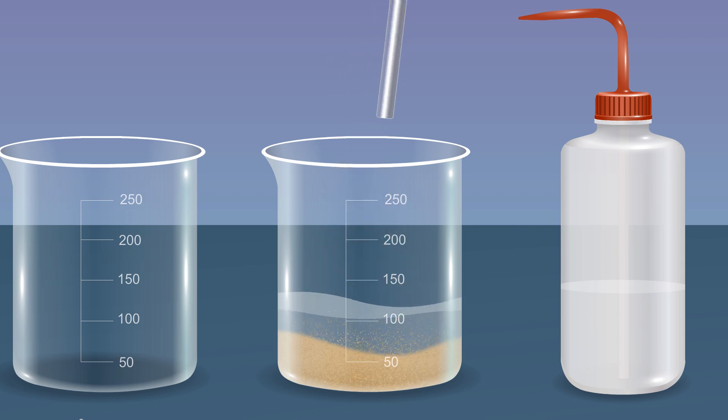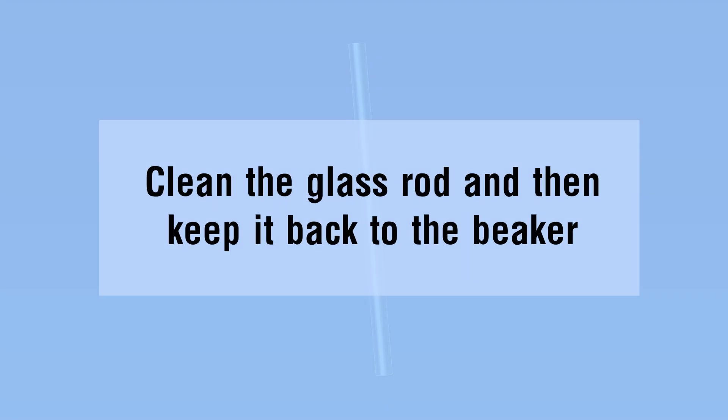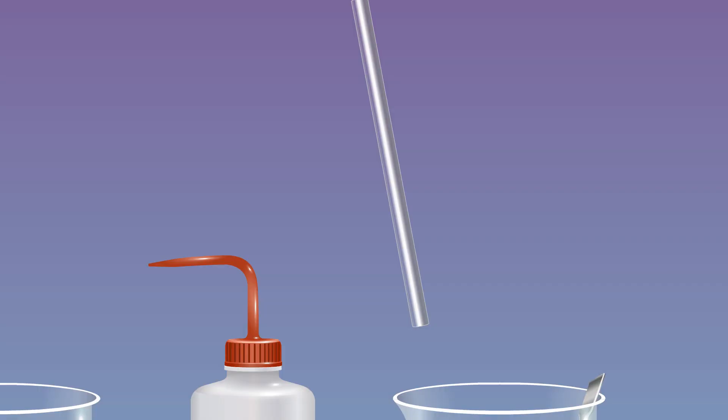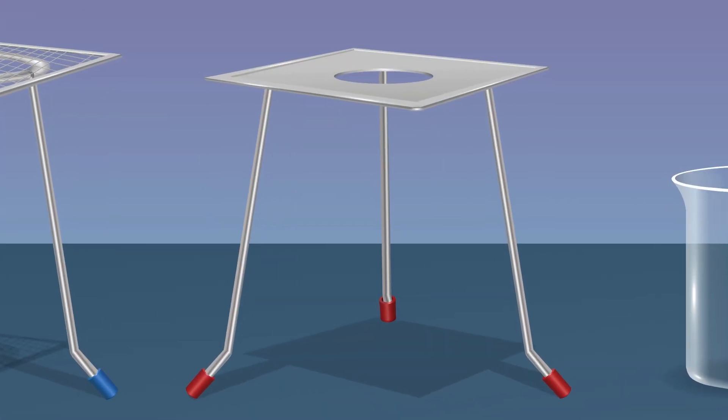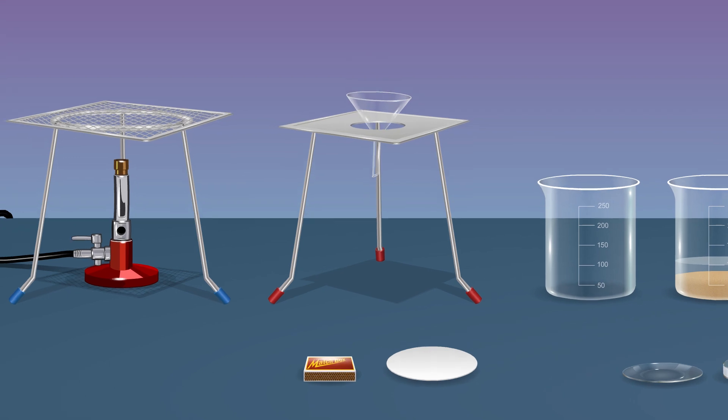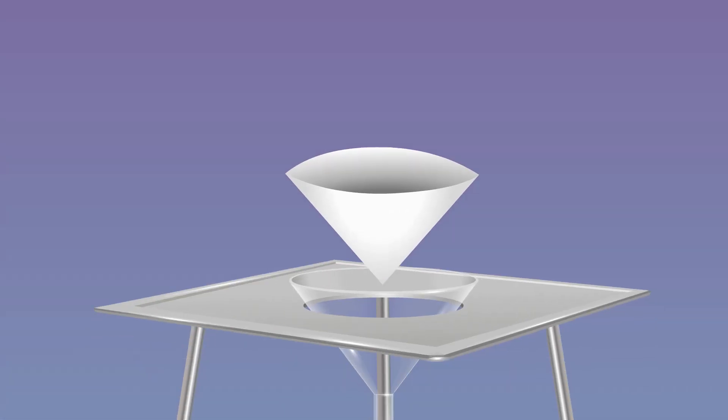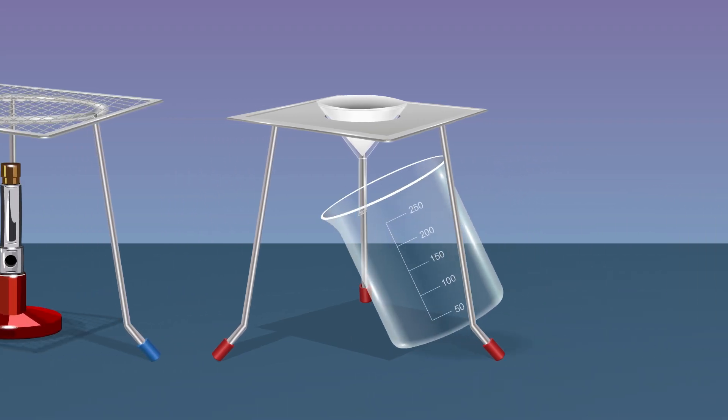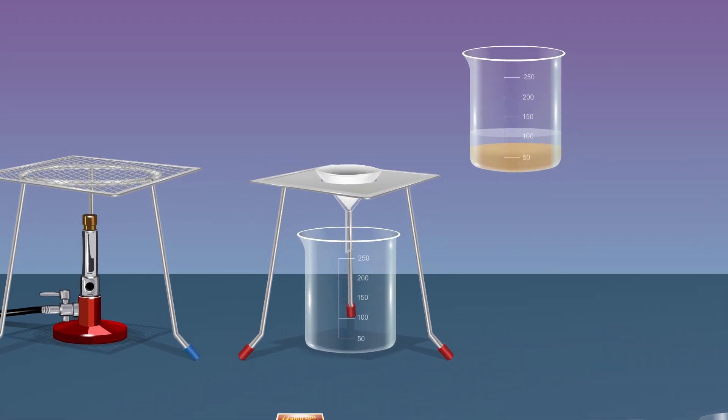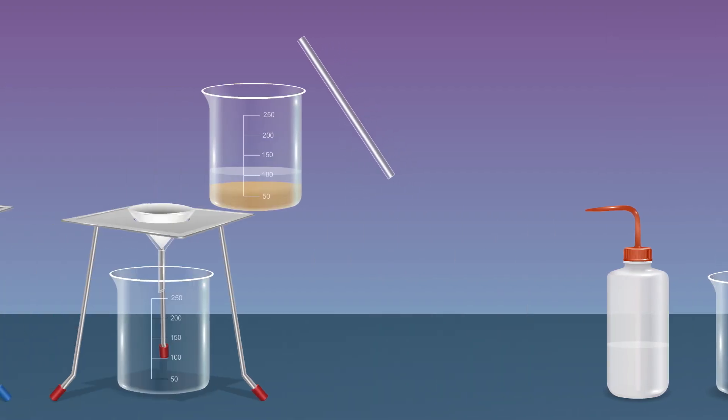Place a tripod stand. Keep the funnel in the tripod stand. Fold the filter paper and place it inside the funnel. Filter the contents with the help of a funnel and filter paper.